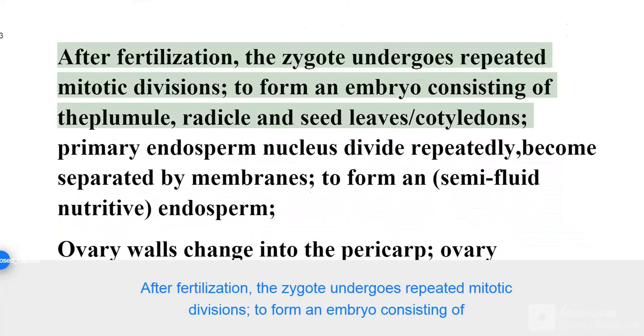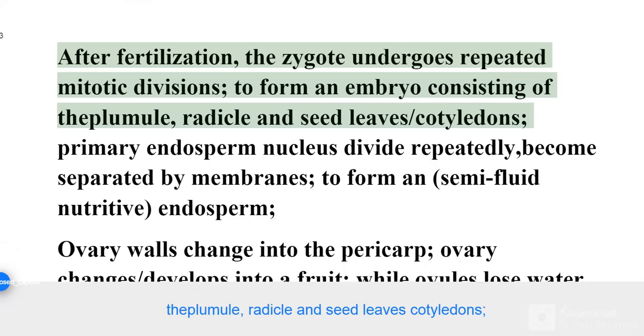After fertilization, the zygote undergoes repeated mitotic divisions to form an embryo consisting of the plumule, radicle, and seed leaves (cotyledons).